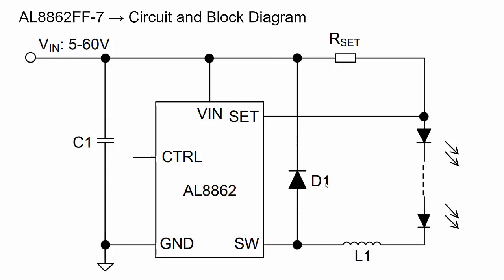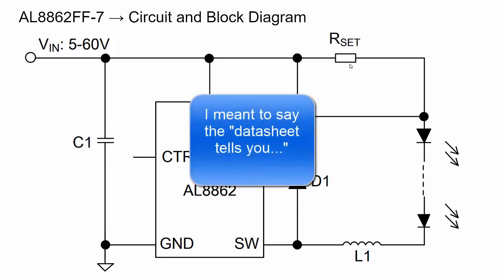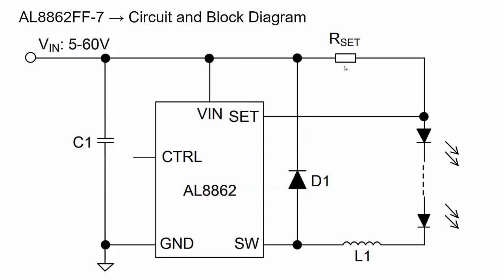This is a current-controlled circuit, and the way it does that is via RSET. The value you use for RSET sets the maximum current for the circuit — the data sheet tells you what values to use. Using 0.1 ohm gives you the maximum of 1 amp through your LEDs. The chip monitors voltage before and after RSET using the VIN and SET pins, regulating a certain voltage drop across RSET to determine what current is flowing through it. That's how it regulates current flow, not voltage — the voltage will vary based on how many LEDs are in the series string.